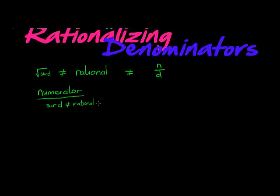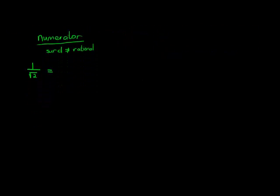It is convention in mathematics to rationalize the denominator, since the denominator tells me in how many pieces my numerator has been divided. It doesn't make sense to use an irrational number there. So in this lesson we'll learn how to change something like 1 over the square root of 2 into a fraction where my denominator is a rational number — usually an integer.